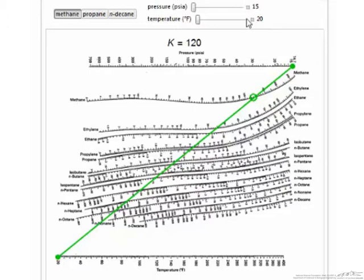K values are determined empirically, with each k value a function of temperature and pressure. Nomographs are available to determine a value of k for a given material at a fixed pressure and temperature.